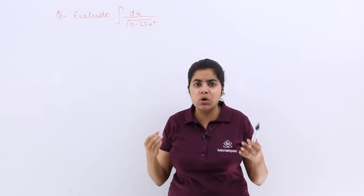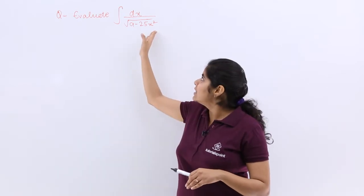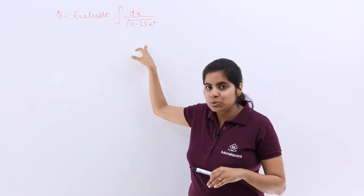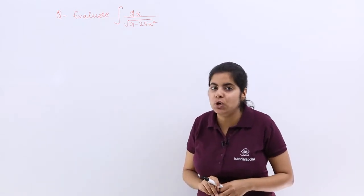We cannot think if the coefficient is not 1. It makes it difficult. So let's make the question easy. Let's divide here by 25 so that 25 would vanish from this coefficient of x square.